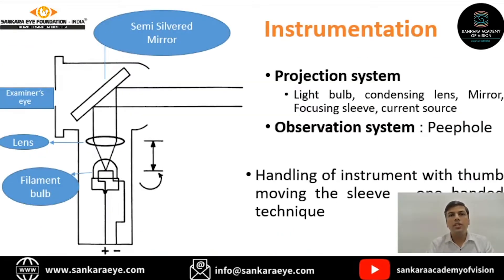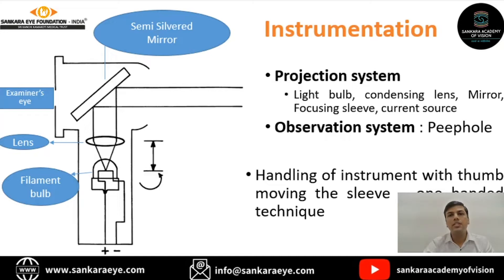Coming to the parts of the retinoscope: the instrument is attached to a battery, which can be rechargeable or disposable. This connects to a filament bulb as the light source, followed by a condensing lens that focuses the light rays. There is a peep hole where the examiner observes, and the light from the condensing lens is focused on a semi-silvered mirror, allowing the reflected light to be seen through it.